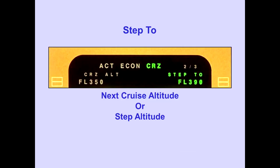The step 2 line displays the next cruise altitude or step altitude. The step 2 altitude is the next ICAO standard altitude or step interval that was entered, but cannot exceed the maximum altitude at the step point. The FMC computes altitude step points based on the entered step size, which results in minimum trip cost.